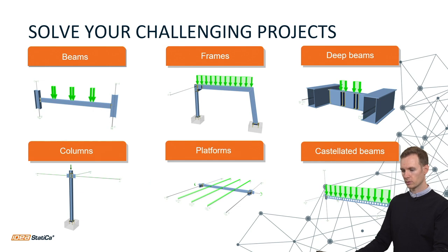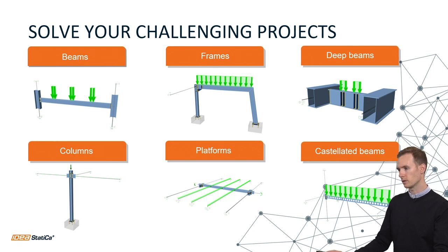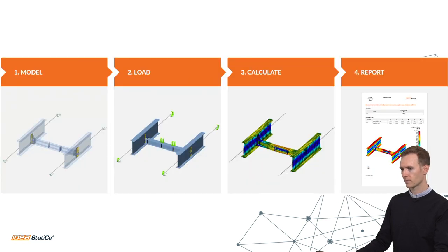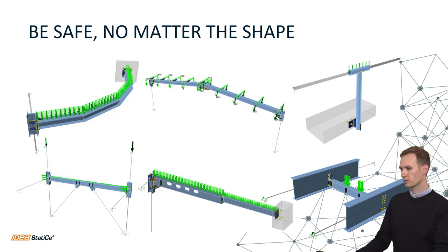There is also a module called Member, which can do stability and buckling calculations of beams and columns with a real connection on each side. You can model a beam or column with the actual connection — including bolts, plates and welds — get the correct rotational stiffness, and then check stability and buckling. There are various examples of different beams and columns that can be modeled in this application.